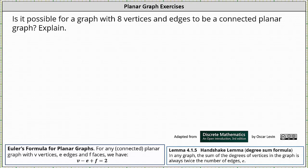Is it possible for a graph with eight vertices and edges to be a connected planar graph? Explain. Remember a connected planar graph is a connected graph in which none of the edges cross.